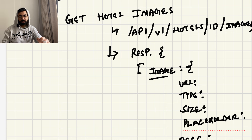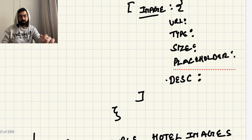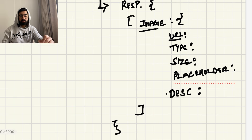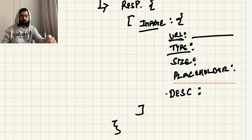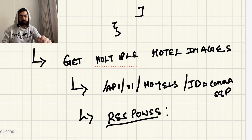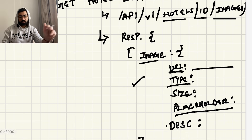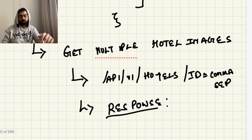Now let's talk about the APIs. The first API is a simple get hotel images — you give a hotel ID and get the images. The response returns the image URL, the type of image, the image size, a placeholder for when the image cannot be loaded, the image size, and any description. The second API is get multiple hotel images, which will be used on the search page.